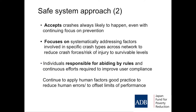The safe system focuses on systematically addressing the factors involved in specific crash types. There are only about five crash types on the road network — five sets of circumstances to worry about: head-on crashes, intersection crashes, run-off-the-road crashes, rear-end crashes, and pedestrian crashes. If we start to understand the factors involved in each of those, we can start to think about what we do. It is manageable.